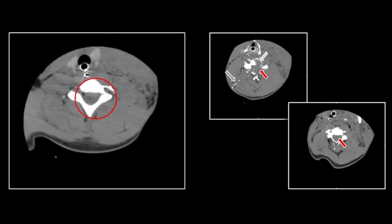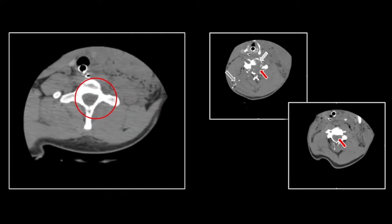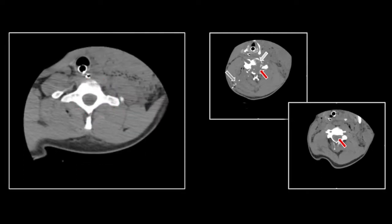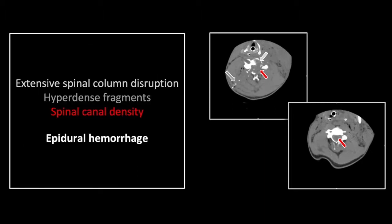This kind of diffuse abnormality is easy to miss on both CT and MR, but obviously in the presence of such an extensive injury, you'd have known to begin looking for it. That is an extensive epidural hemorrhage.